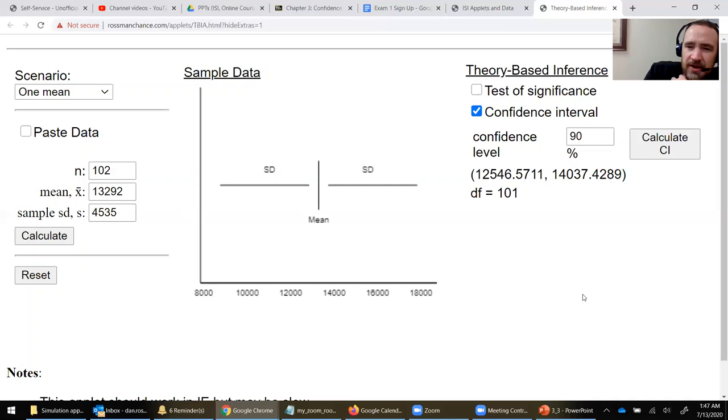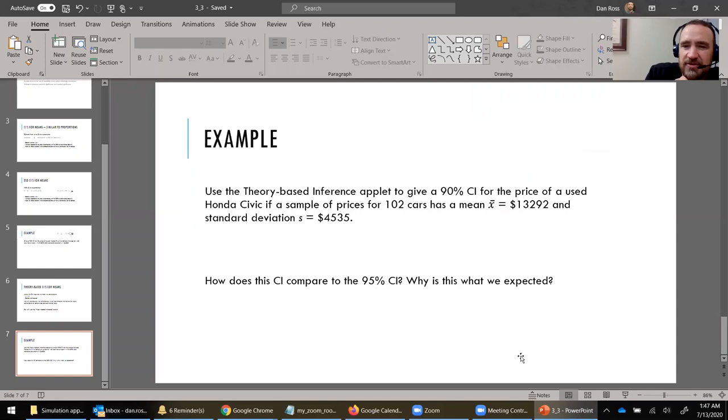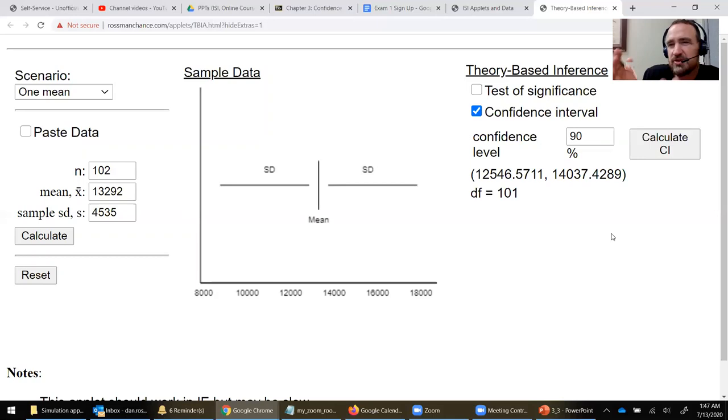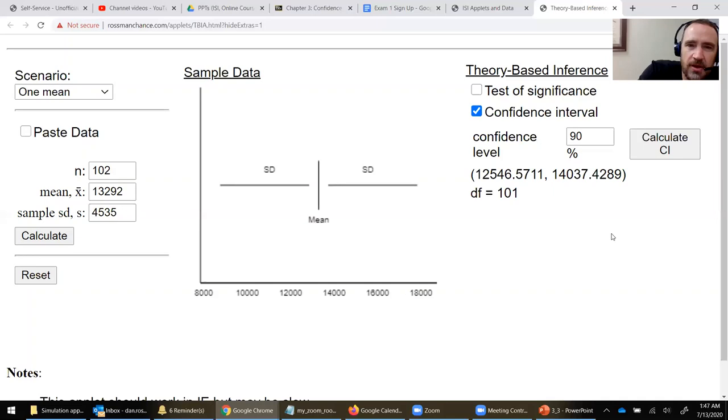How does that compare to the other one? That one is actually, how does that CI compare to the 95? It's actually a little bit narrower. And that is just what we'd expected. We get this trade-off. If we're willing to go with less confidence and a higher chance of an error, we can hone in a little tighter on our confidence interval. All right. So that's confidence intervals for means and the theory-based approach.